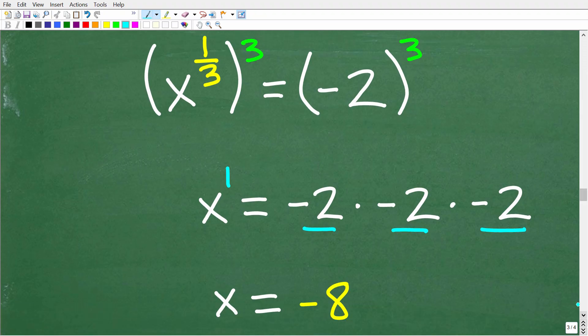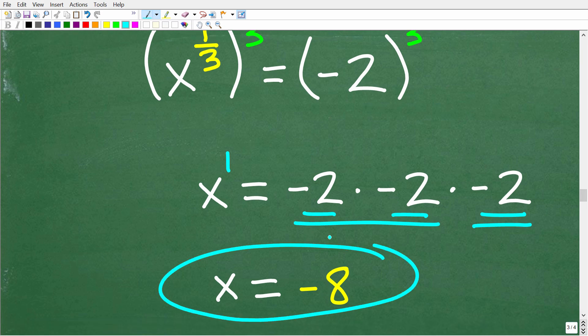And then negative 2 to the 3rd power is negative 2 times itself 3 times. Okay, so negative 2 times negative 2, this is a positive 4, times a negative 2. So our final answer here is x is equal to negative 8.